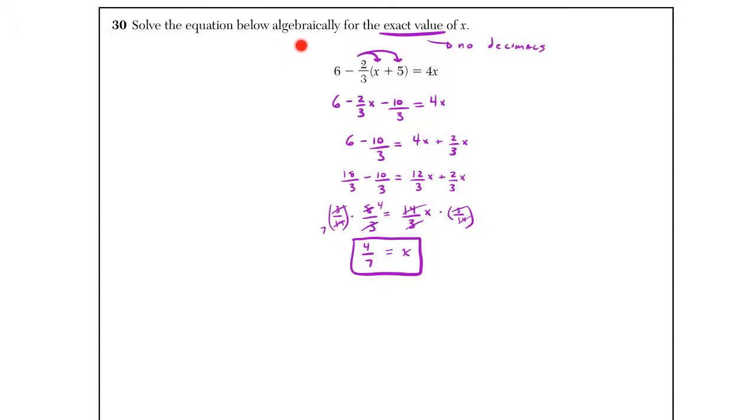And that's question 30. Also take notice of the words algebraically, meaning we can't do any fancy, like y equals stuff, using systems or something, creating two different functions here and using intersect. So we did have to show all this work for a 2 pointer.